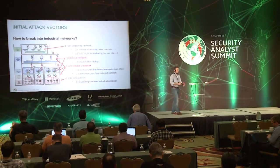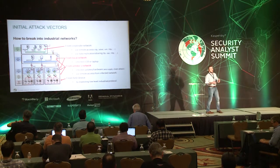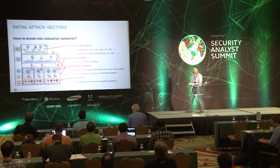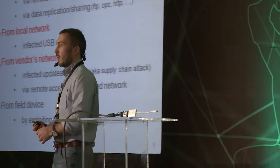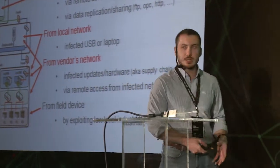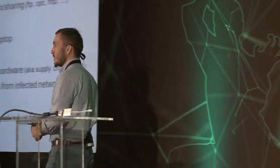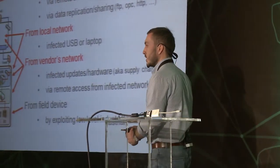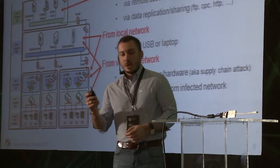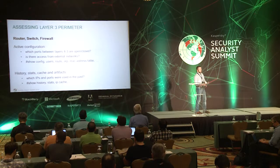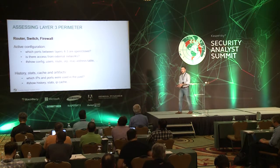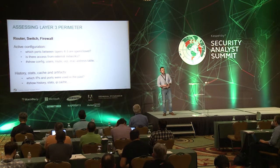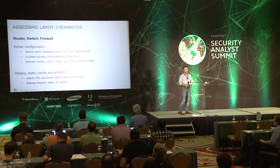The two main attack vectors are: from the local network when an employee uses an infected laptop or USB stick bringing updates to the systems, and from the vendor's network where the vendor can manipulate or collect information about devices and network events. The vendor network can be connected to different layers, which poses the greatest risk because there are so many possibilities for attackers to attack different layers in industrial systems. We'll start with the network attack vector from the corporate or vendor network.